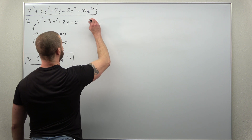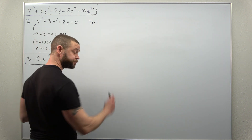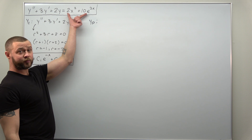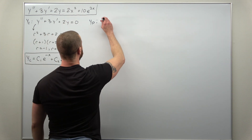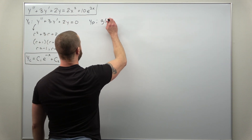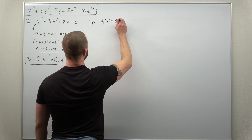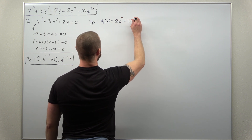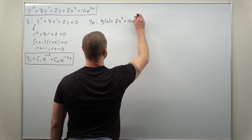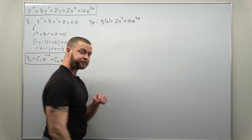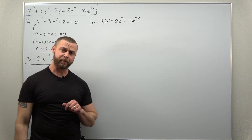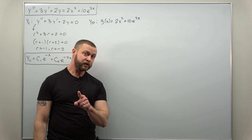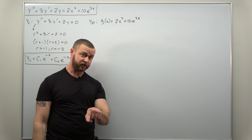We're going to use undetermined coefficients for that. We always start by looking at our right-hand side, what we call g of x, which is 2x squared plus 10 times e to the 3x. And we make a choice for the particular solution from here. The only new part occurs right now.